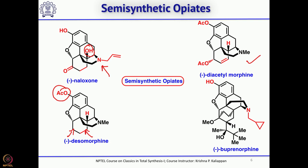These are all for information — you do not have to worry too much. The reason for showing all these structures is because morphine derivatives are used as analgesics, and there is still a lot of work going on making more and more analogues of morphine. This particular molecule is made from thebaine: they take thebaine, do a Diels–Alder reaction with methyl vinyl ketone, followed by addition of tert-butyllithium, and introduce a cyclopropylmethyl group instead of a methyl group.